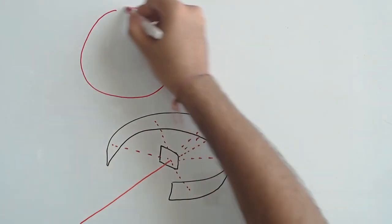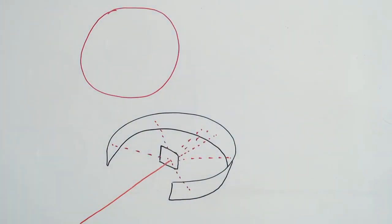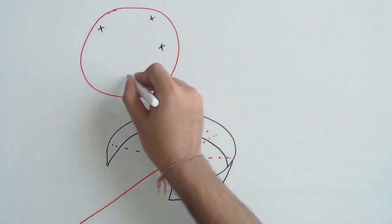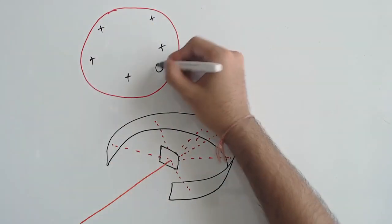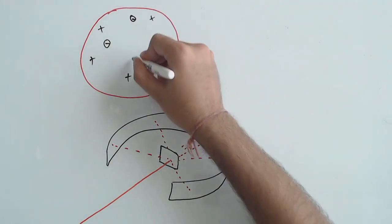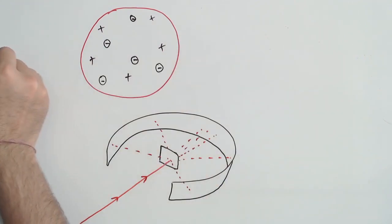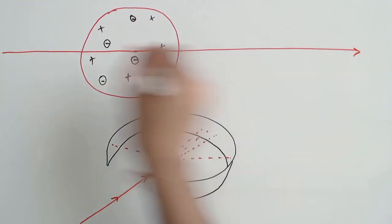At the time, the somewhat prevailing view of the atom was the plum pudding model. That is, a model where the atom was depicted as a sphere of uniform positive charge throughout the entire radius with some electrons sprinkled in to attain an overall neutral atom.